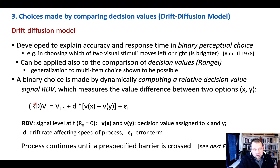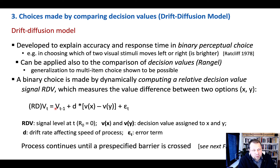This models the evidence accumulation process we saw neurons performing in area LIP and area MT. It is the relative decision value of the previous time step plus a drift rate — usually in the order of 0.1 to 0.9, a value between 0 and 1 — which gives an updating weight.